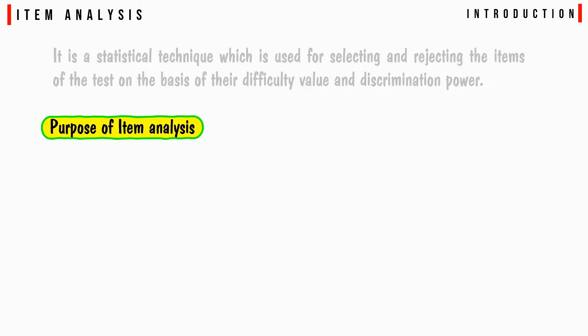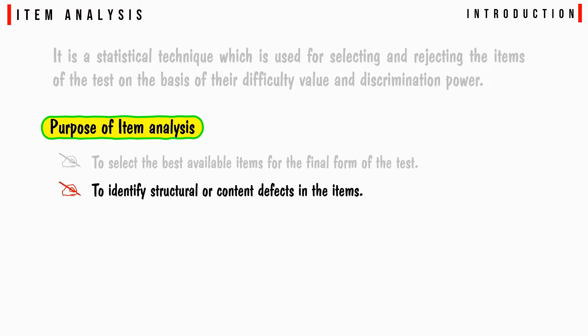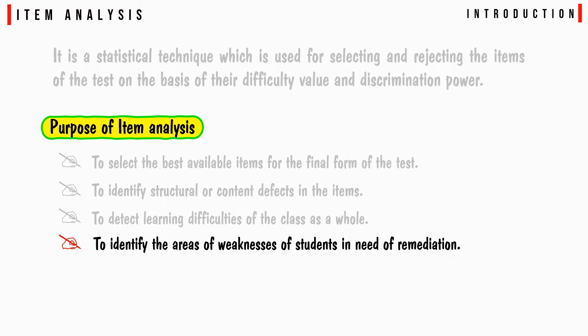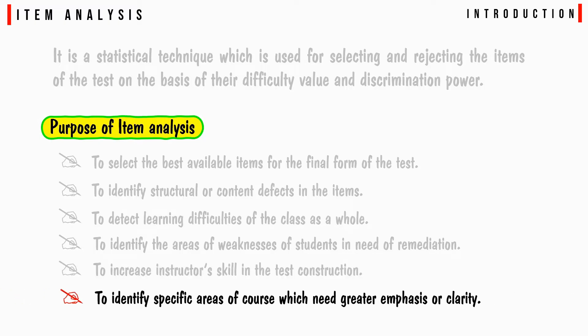The purposes of item analysis are: to select the best available items for the final form of the test, to identify structural or content defects in the items, to detect learning difficulties of the class as a whole, to identify areas of weakness of students in need of remediation, to increase instructor skill in test construction, and to identify specific areas of the course which need greater emphasis or clarity.